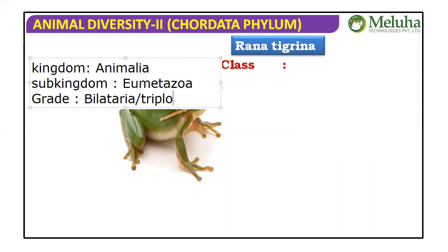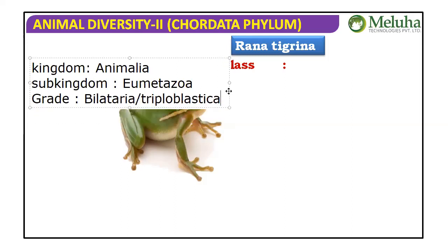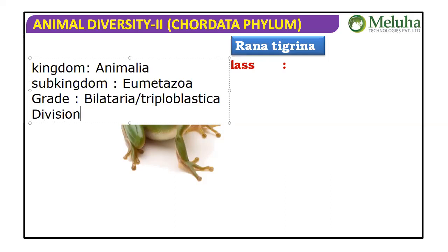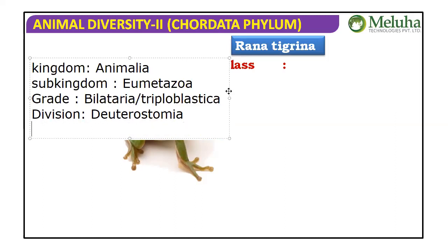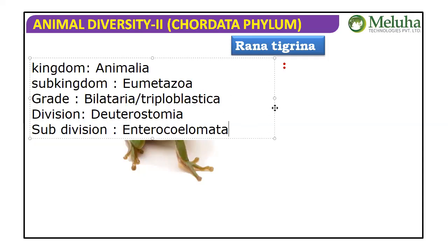The Grade Bilateria means bilateral symmetry is expected. There are three germ layers, and the type of organization is organ system level. The Division is Deuterostomia, meaning the fate of the blastopore is anus, the type of cleavage is indeterminate, and the embryo is regulative. The Subdivision is Enterocoelomata, so the body cavity is a true coelom formed from pouches of the archenteron.